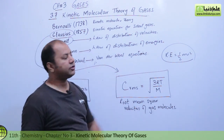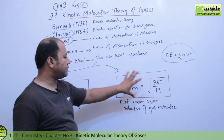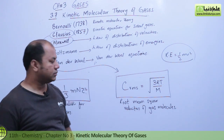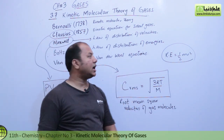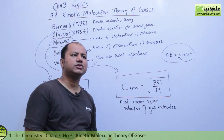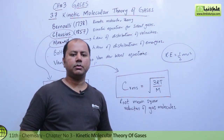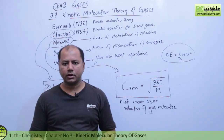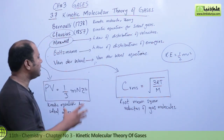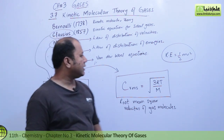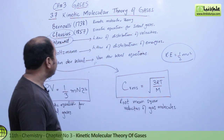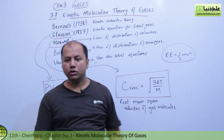Maxwell gave the law of distribution of velocities, known as the root mean square velocities of gas molecules. Boltzmann gave the law of distribution of energies, though we will not discuss that here as it is not part of our syllabus. Van der Waals equations are also there, and we will talk about Van der Waals at the end of this chapter. Now let me tell you about the Kinetic Molecular Theory of Gases.